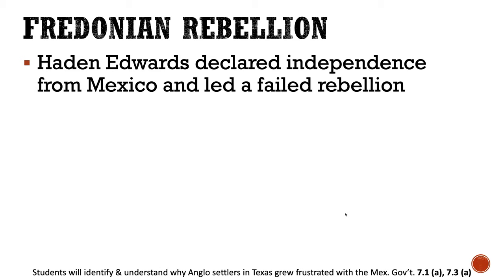There were threats of violence from Hayden Edwards and his American settlers, and the Mexican government had to get involved. When they did, Edwards declared independence. He called his new country Fredonia. From the map you can see it was not too far from the Gulf of Mexico and was also close to the Sabine River, the border between Texas and Louisiana. The town of Nacogdoches is in the northeast corner of Hayden Edwards' colony, and his colony actually butts up against Stephen F. Austin's colony.